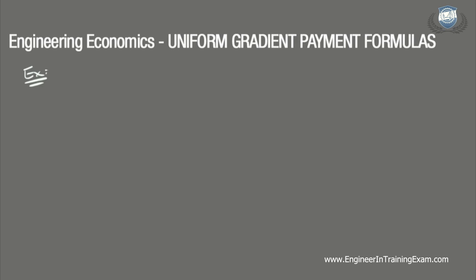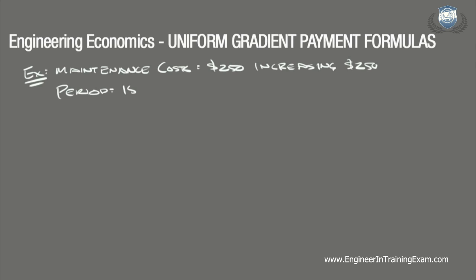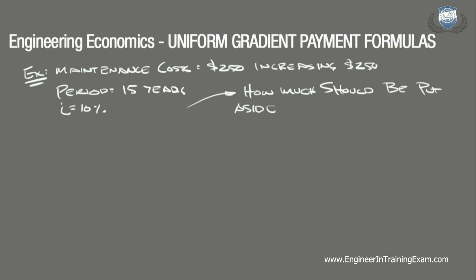A company purchases a machine that is projected to have a maintenance cost of $250 after the first year, and is expected to increase $250 every year thereafter for the 15-year expected lifespan. Assuming a 10% interest rate, how much money should the company put aside now to maintain this machine for the duration of its lifespan?